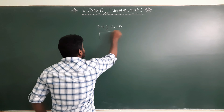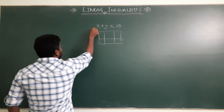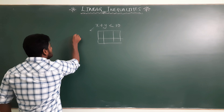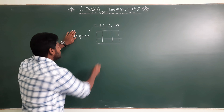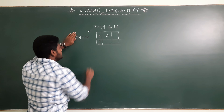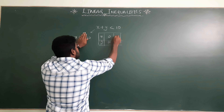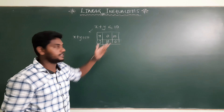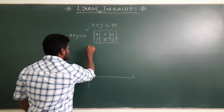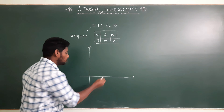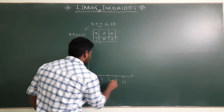How do you solve x plus y less than 10? First of all, we convert this inequality into an equation: x plus y equal to 10. If x equals 0, then y equals 10; if y equals 0, then x equals 10. So the points are (0, 10) and (10, 0). On the graph, the scale is 2 units per division — 2, 4, 6, 8, 10 on both axes.